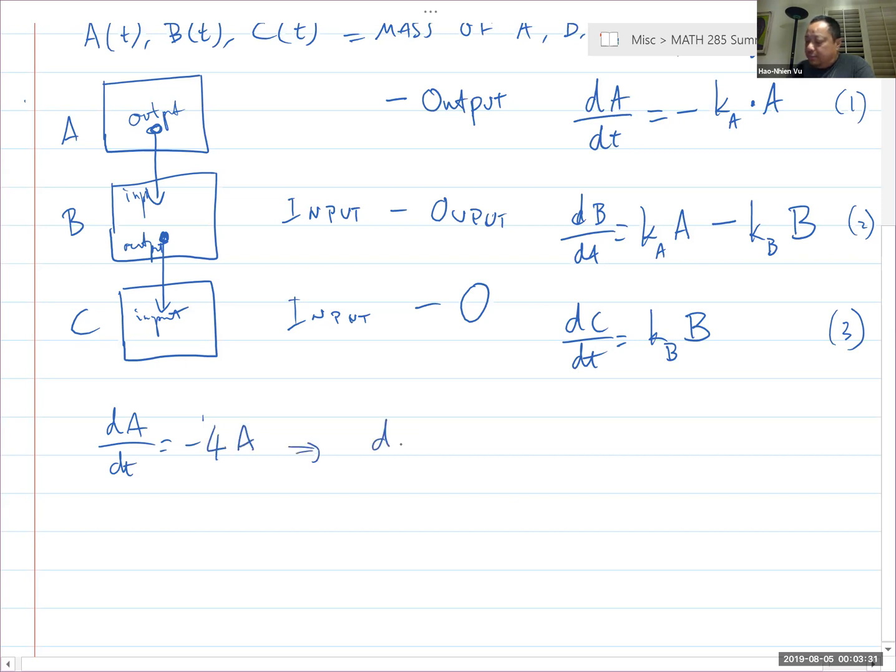Right, it's a separable equation. So I go dA over A is equal to minus four dt. And then I integrate both sides. I get ln of A. And I don't need absolute value because we're talking about the mass of something is positive. I'm going to keep it positive only. So minus four T plus C.